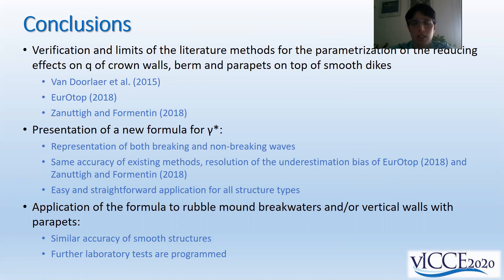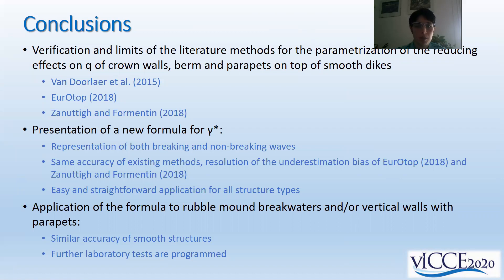The new formula developed based on genetic programming can contemporarily account for both breaking and non-breaking waves. It achieves the same accuracy as other existing methods but solves the underestimation bias of EurOtop 2018. It proposes an easy and straightforward application for all structure types, independently of the combination of structural elements. We have finally proposed the application of the formula to rubble mound breakwaters and vertical walls with parapets, obtaining similar accuracy. Further laboratory tests are planned at the University of Bologna to validate the formula extended to these latest kinds of structures.